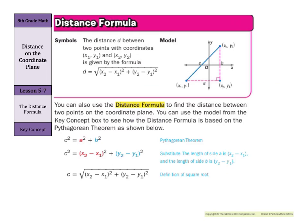Now, there is another way to find distances on the coordinate plane and that is by using the distance formula. Now you can also use the distance formula to find the distance between two points on the coordinate plane. You can use the model from the key concept box above to see how the distance formula is based on the Pythagorean theorem as shown. And we have a² + b² = c² that's our Pythagorean theorem. Now, for our length of a, that's just x₂ - x₁. Our vertical distance is going to be represented by y₂ - y₁ and that's going to be our b. Now, to solve just for c we would take the square root of all of that. And so the distance formula really comes from the Pythagorean theorem.